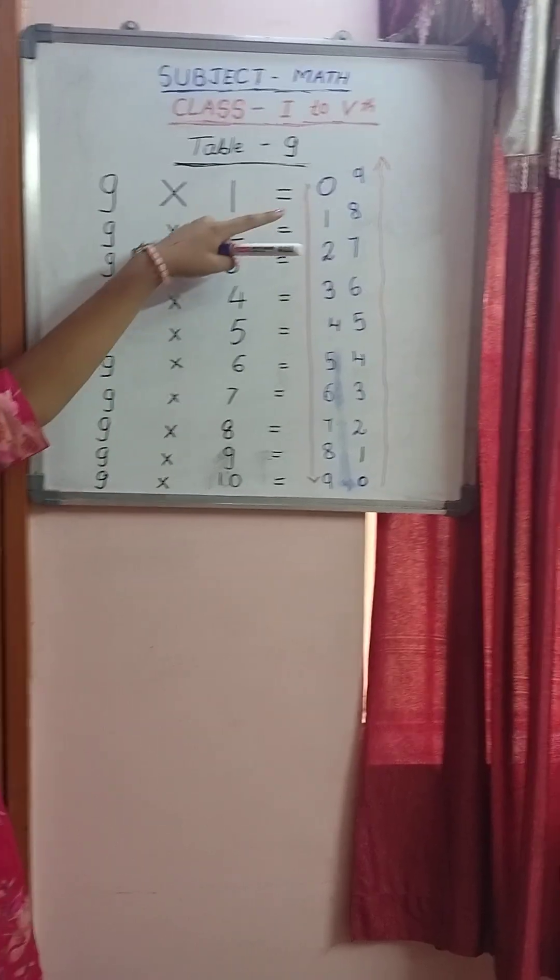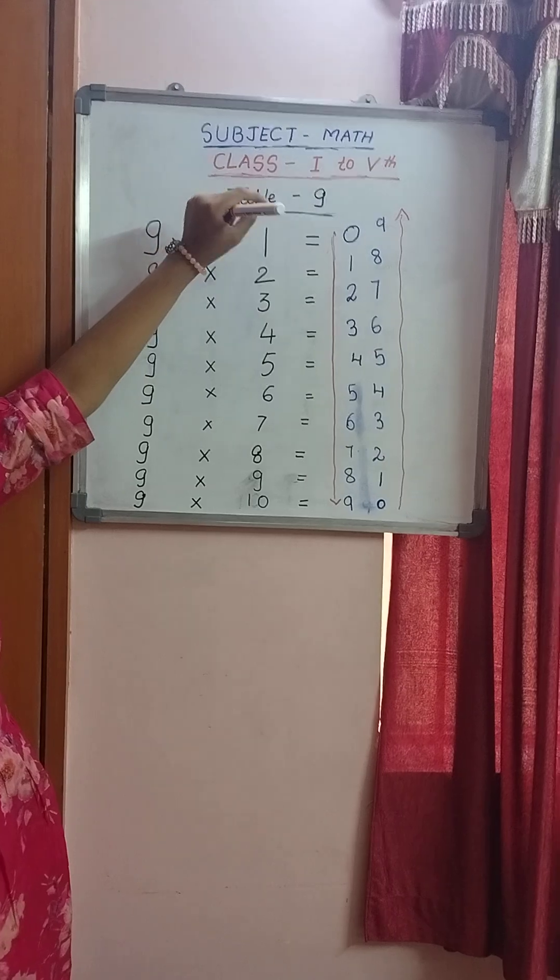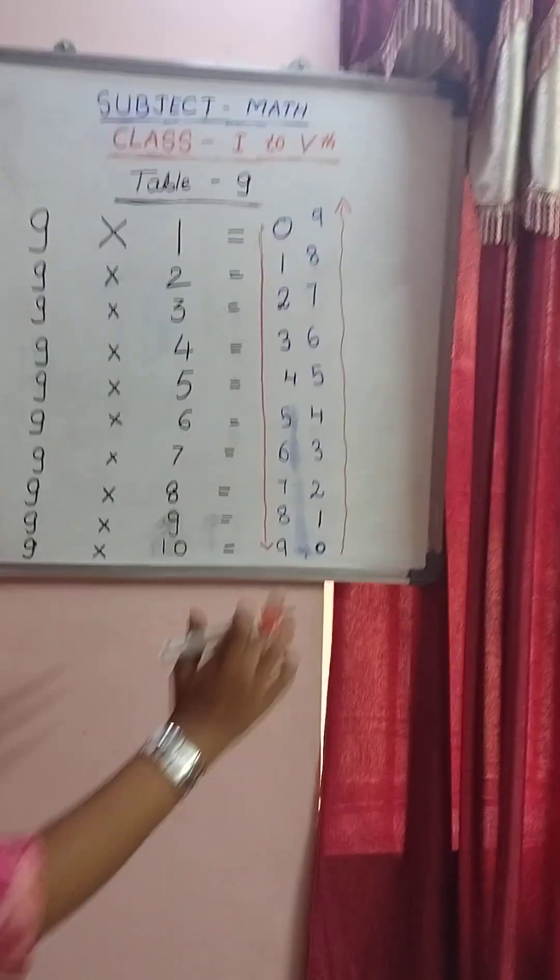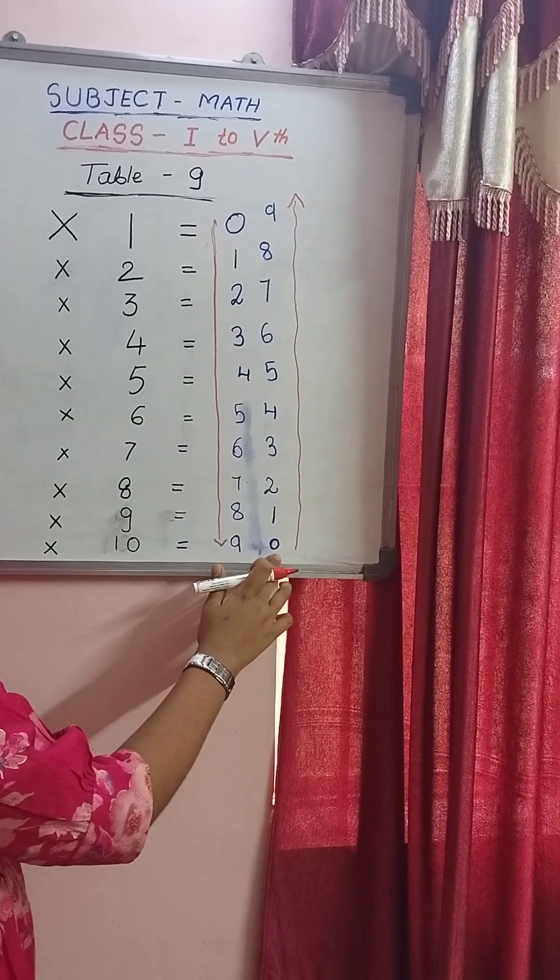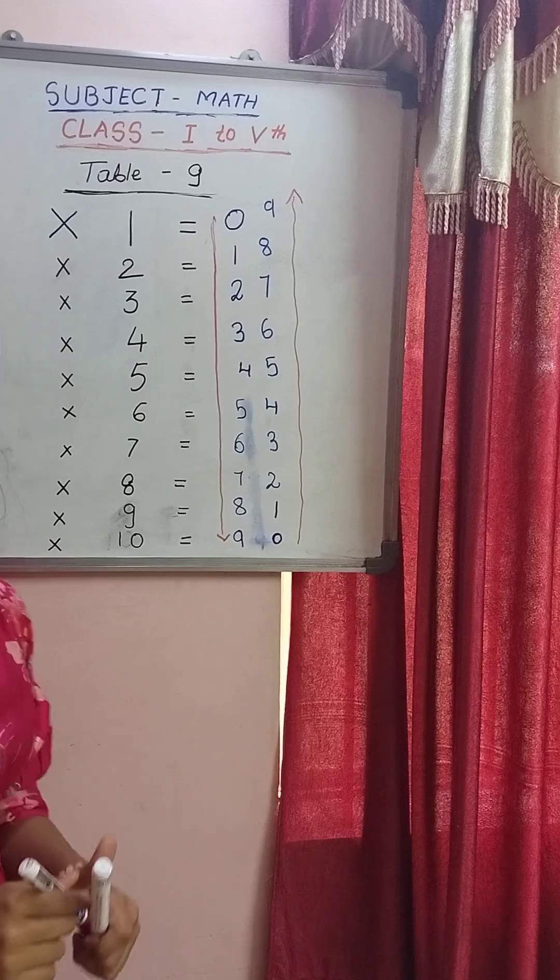So in the first column your numbers grow from the top to the bottom and in the second column your number goes from the bottom to the top and your 9 table is ready.